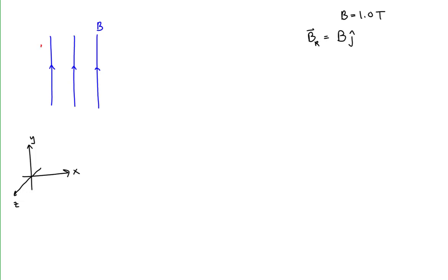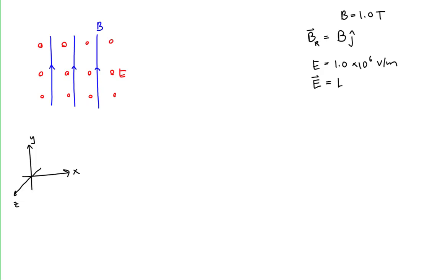The scientists in the rocket ship also measure an electric field, coming straight towards us, represented by these series of dots. The electric field has a magnitude of 1.0 times 10 to the sixth volts per meter. Expressed as a vector, the electric field is equal to E, the magnitude, in the positive z-direction — so k-hat.